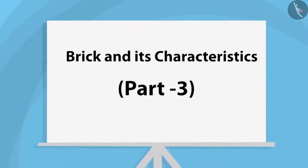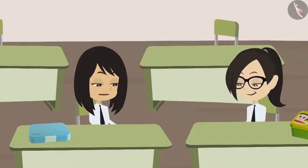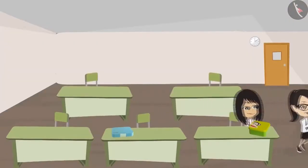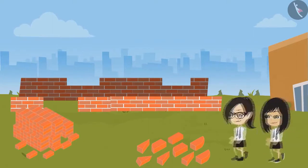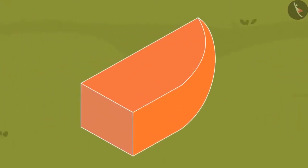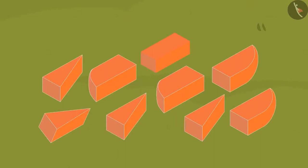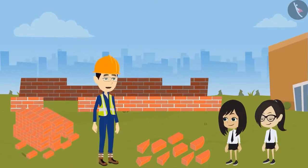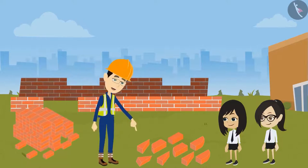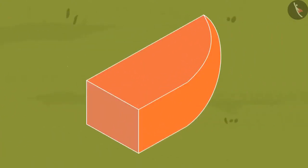Brick and its Characteristics, Part 3. Vandana, let's go and see how much of our canteen has been built. Let's go — we will meet the engineer sir as well. See, Vandana, there are some other shapes of bricks here. This one is triangle in shape. And look here — this one has a round bottom. Engineer sir told us bricks are cuboid in shape, so why are these of different shapes?